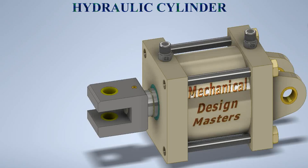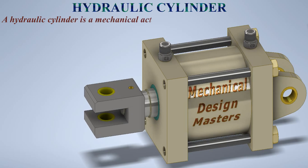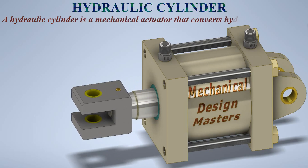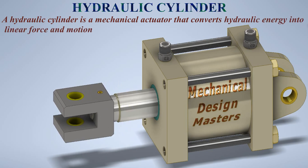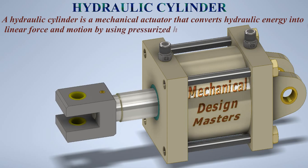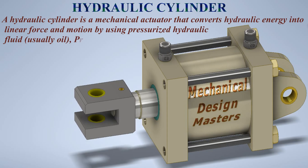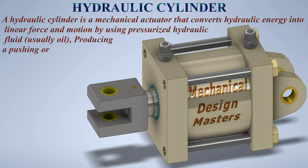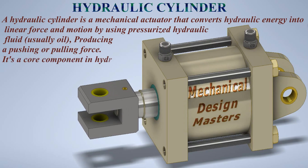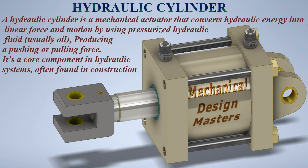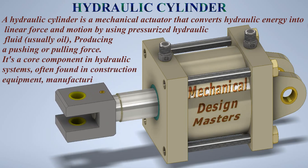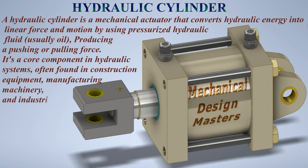Hydraulic cylinder. A hydraulic cylinder is a mechanical actuator that converts hydraulic energy into linear force and motion by using pressurized hydraulic fluid, usually oil, producing a pushing or pulling force. It's a core component in hydraulic systems, often found in construction equipment, manufacturing machinery, and industrial automation.